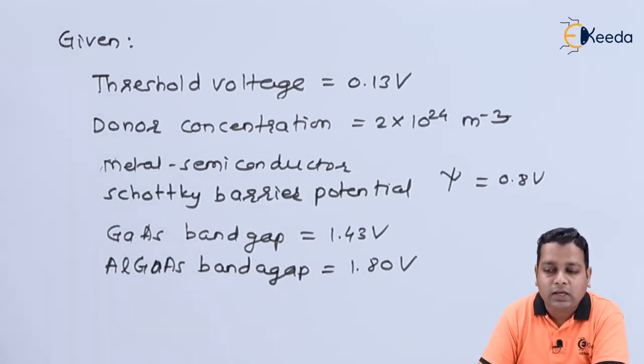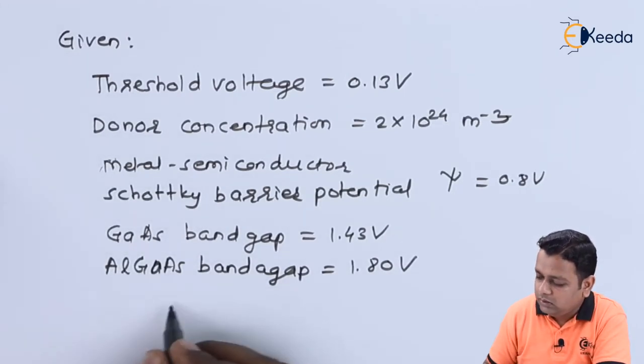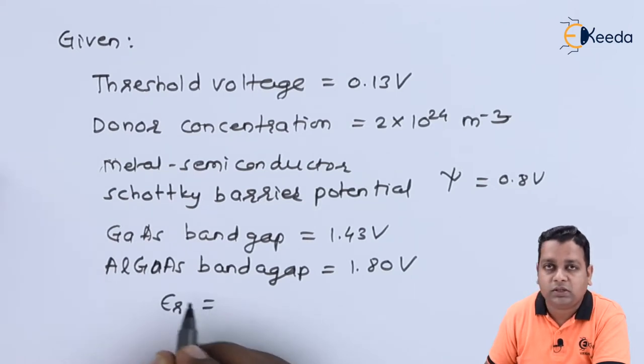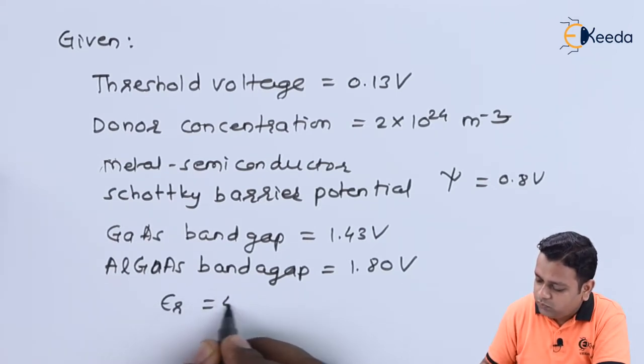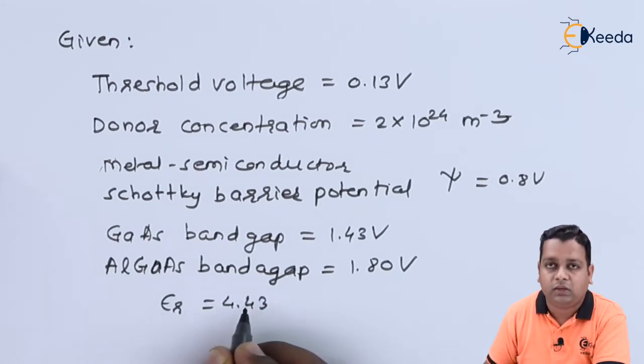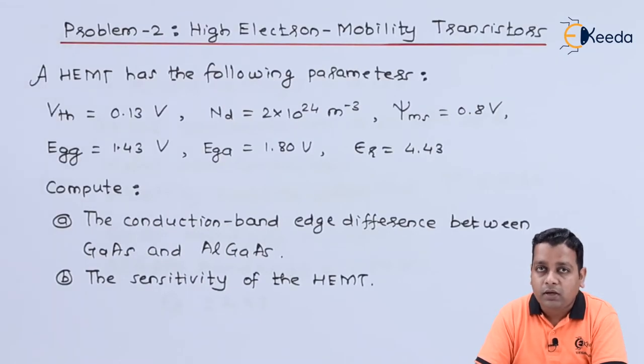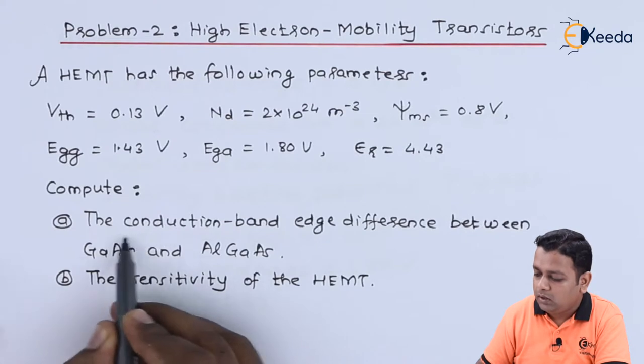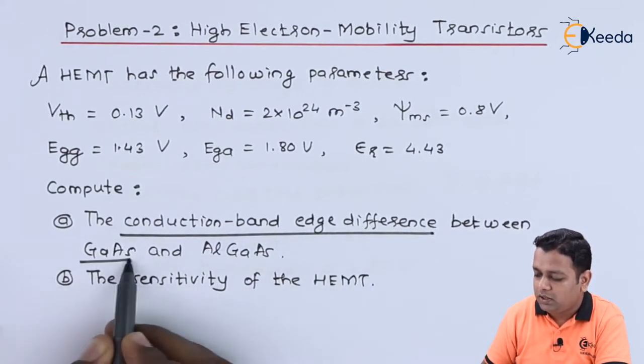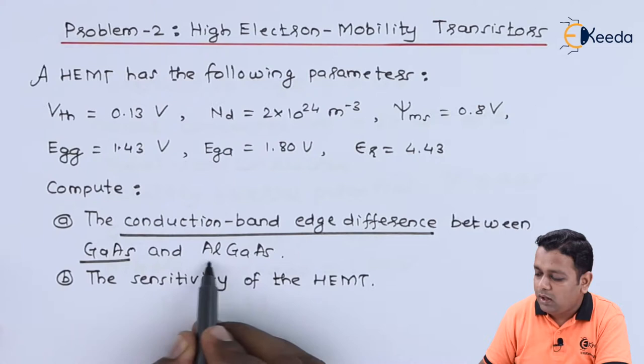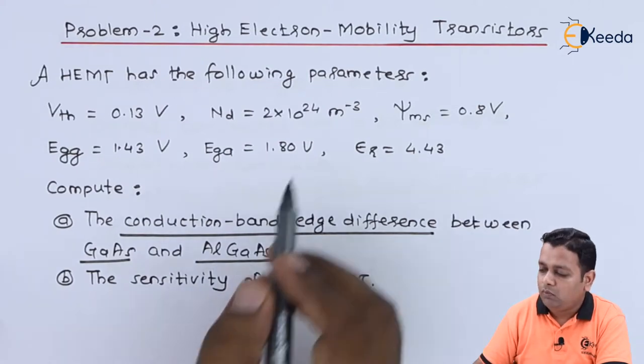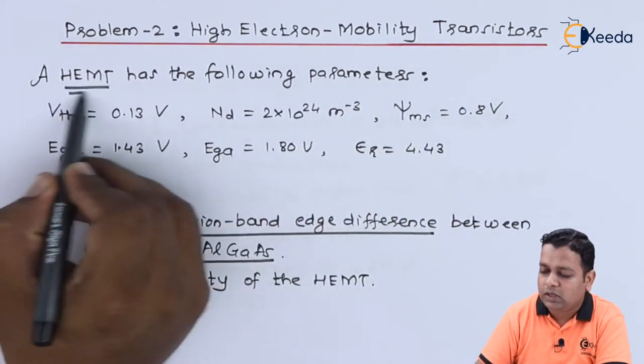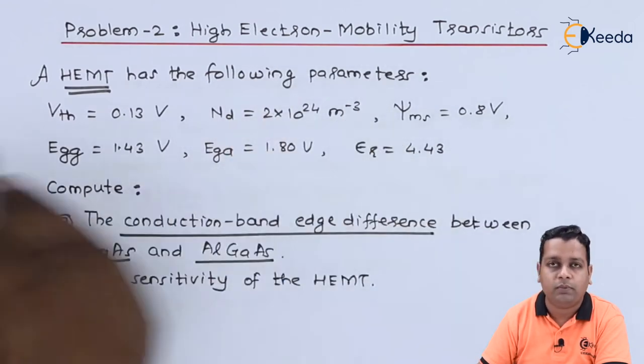The last parameter is the relative dielectric constant, which is 4.43. After identification of the given details, we start computation of the conduction band edge difference between gallium arsenide and aluminium gallium arsenide for the given HEMT.